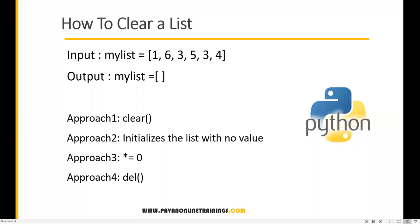Hi everyone, welcome. In this video I am going to show you how to clear a list. For example, I have created one list called my_list which contains some elements and I want to clear all these values. To do this we have many approaches: we can use the clear method, initialize the list with no value, use the star-equal-to-zero operator, or use the del method. These are the different approaches we have.